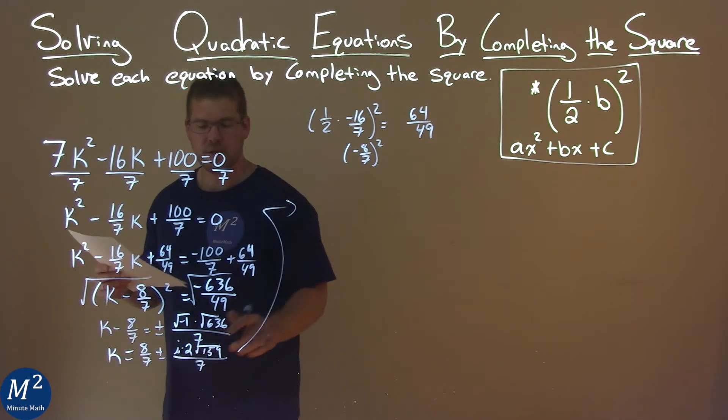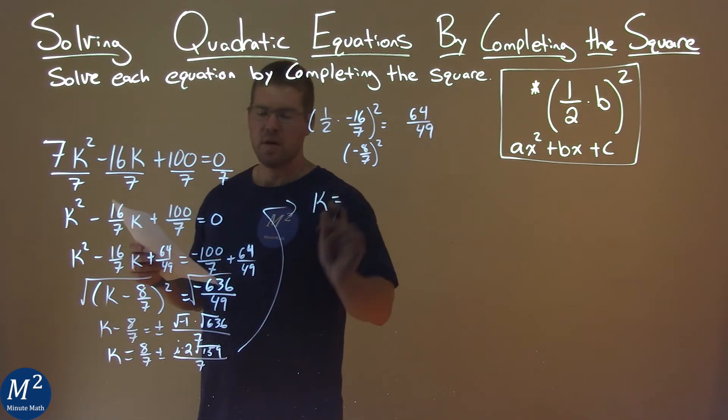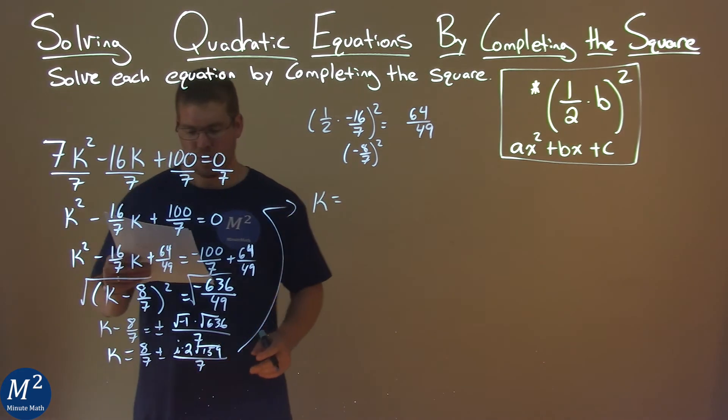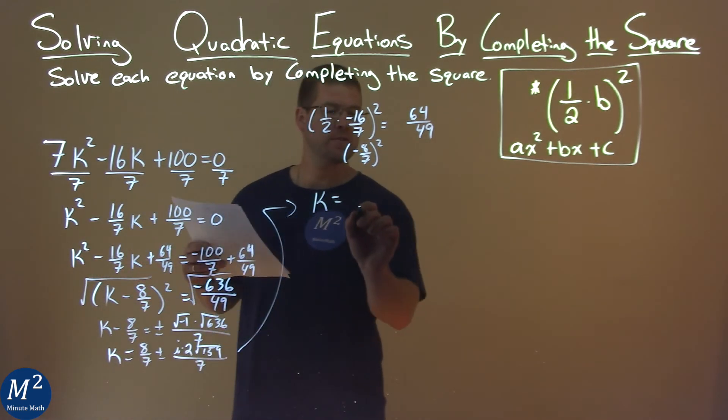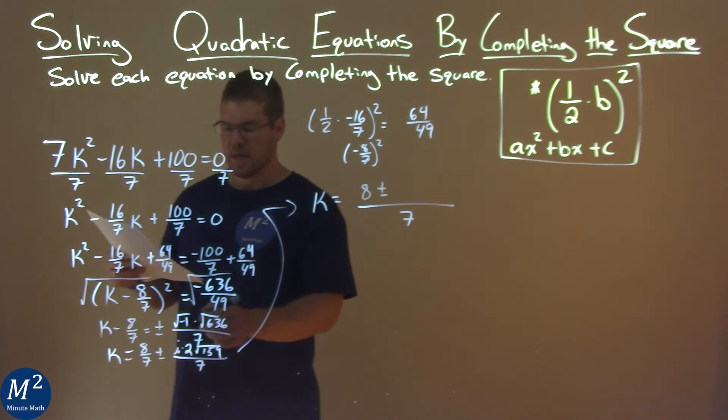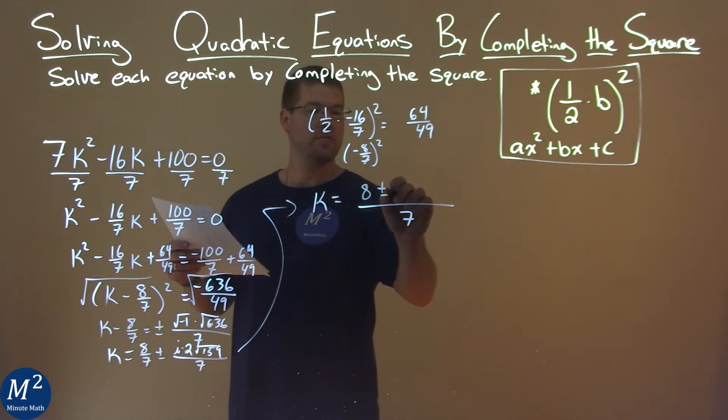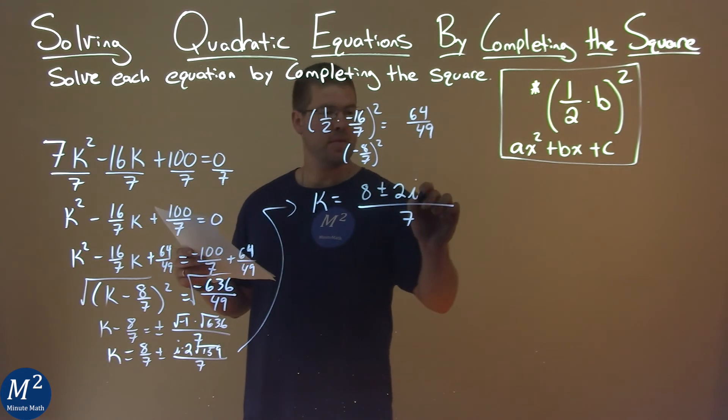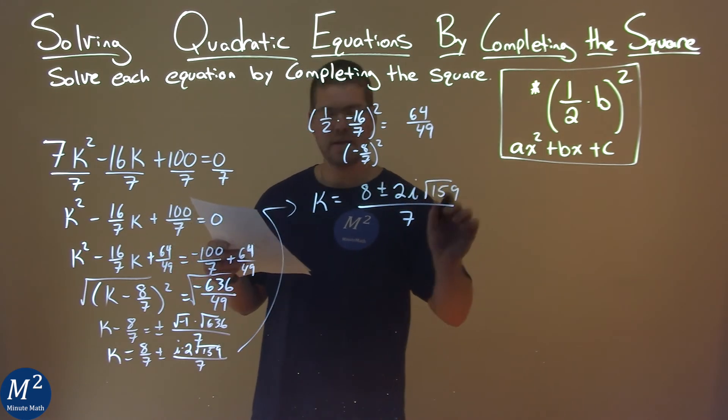So, let's make this a little neater. We have k equals, notice we have a 7 in the denominator for both parts, so we can combine it to be one fraction over 7, and we have 8 plus or minus. Proper technique or writing would have the 2 first, then the i, and the square root of 159.